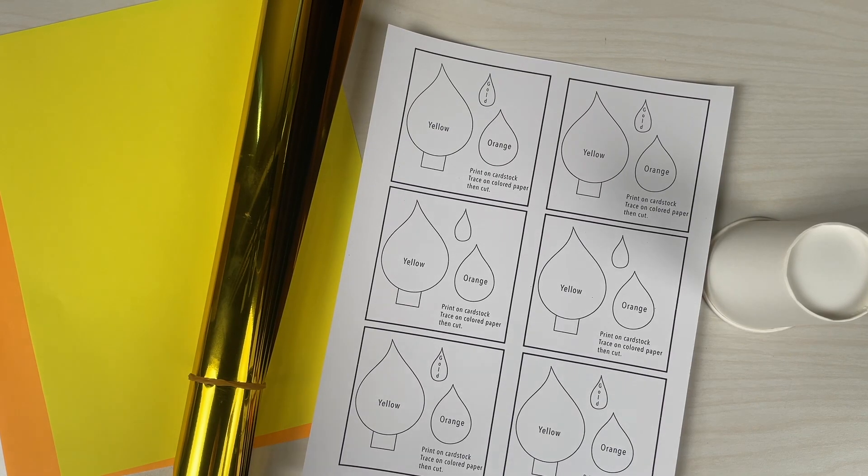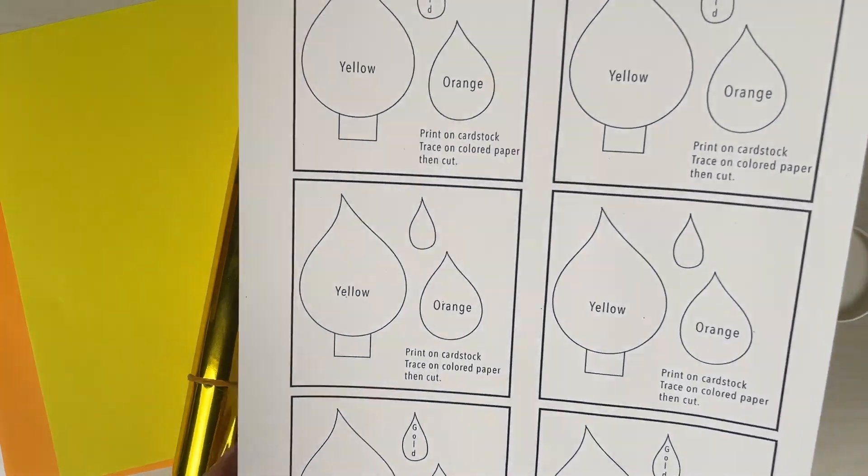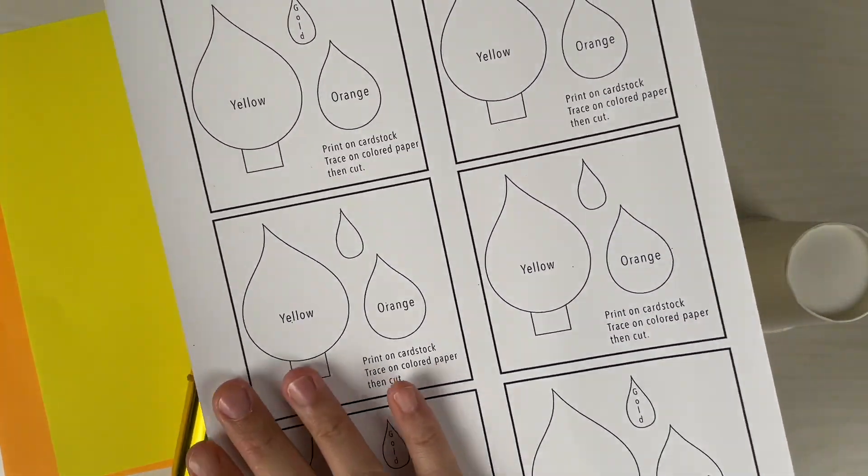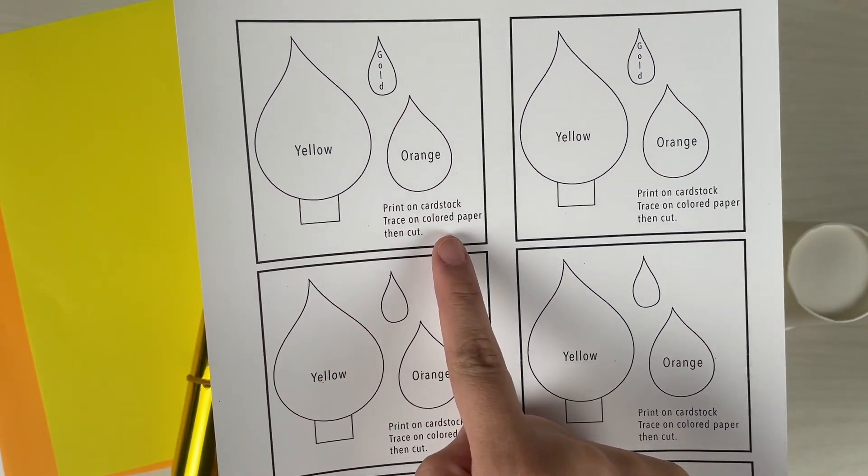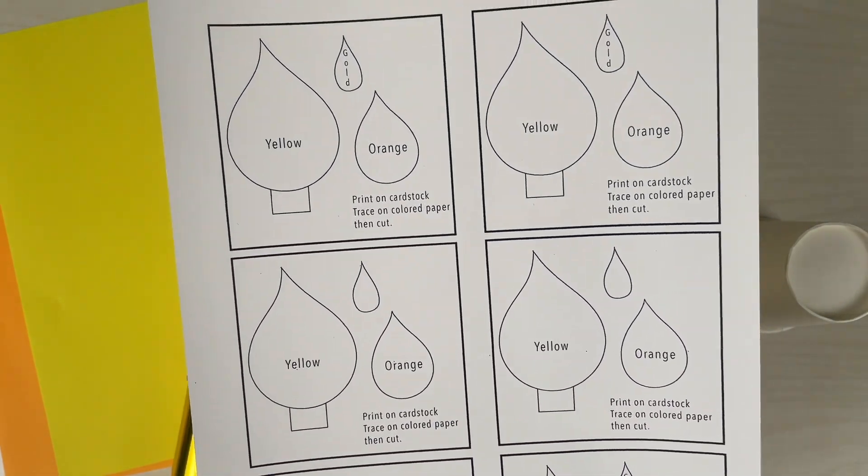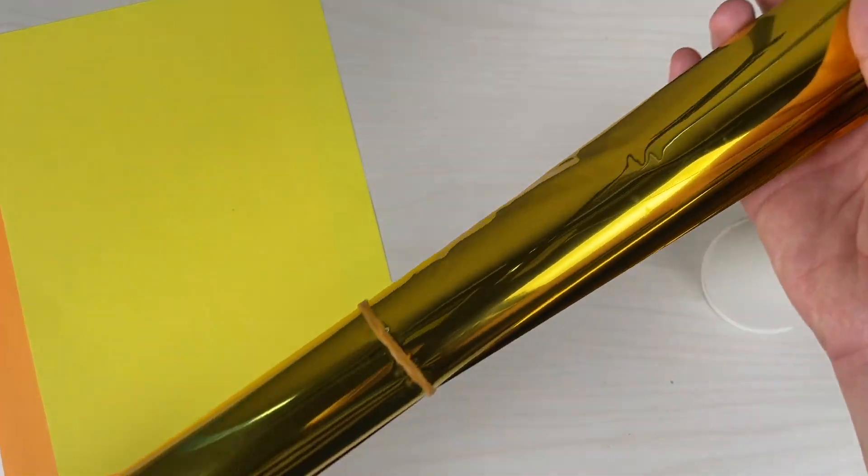First we need the template for the flame, so we have a big, a medium, and a small flame. Print this template on cardstock paper and then cut. Next we'll need some gold paper.